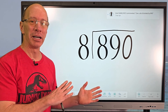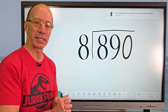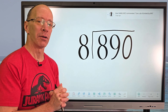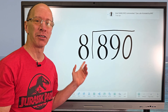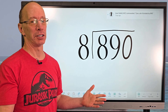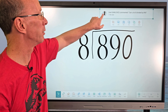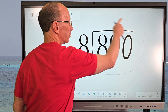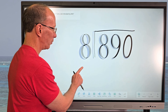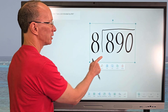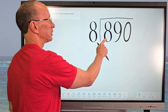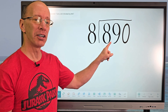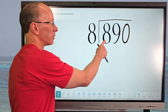Welcome to the show! Today we have a division problem requested by one of my subscribers, Sam. Sam wrote in the comments: 'Please do 890 divided by 8.' That's what we're going to do today. I'm going to move the name off to the side and make the problem a little smaller. We're going to figure out how many times 8 goes into 890, working with the first number.